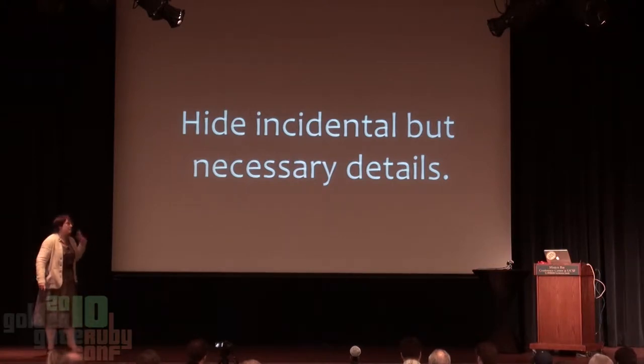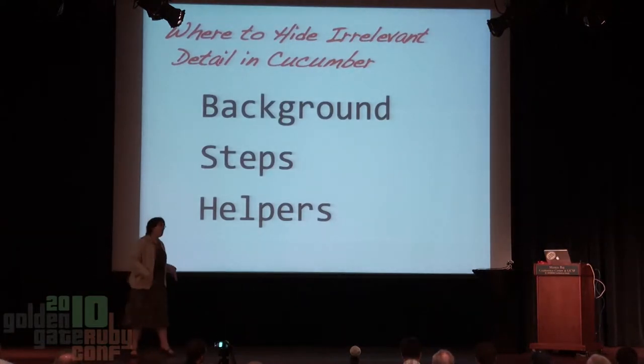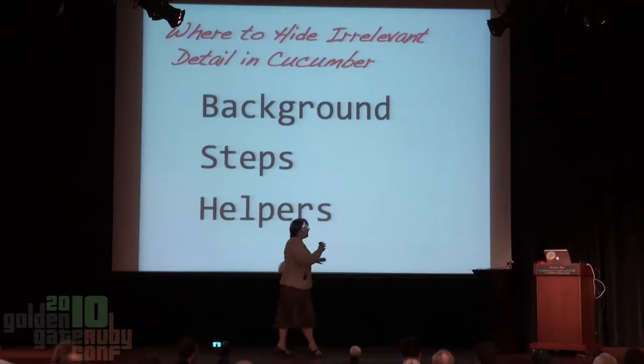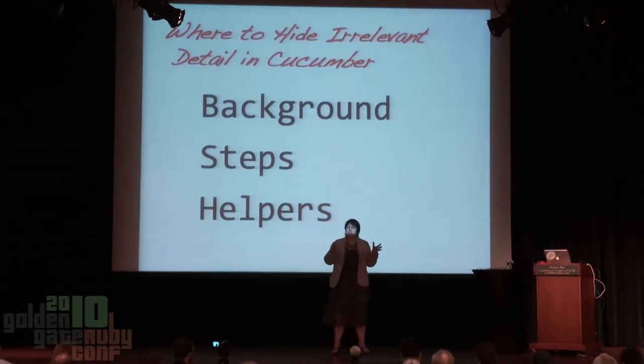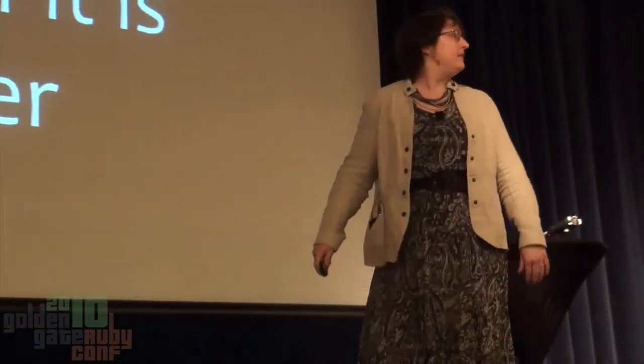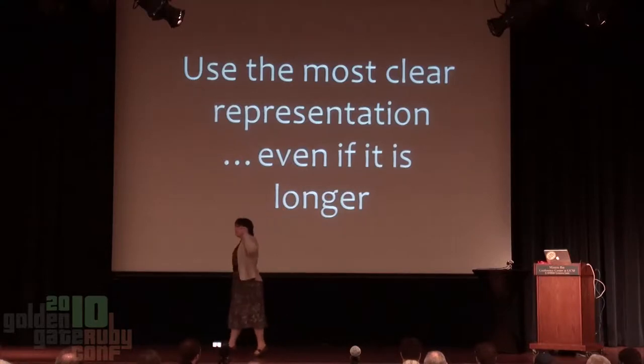The principle at play here is that we're going to hide all of those incidental details. Cucumber gives us fabulous places to hide details — every framework does. In Cucumber we can put stuff in the background, in the steps, in helper methods — lots of places where we can hide the extraneous but necessary details. Okay, I heard like two yeses — by this time I want a 'hell yes'! Excellent. Let's keep going — I only have about 20 minutes.